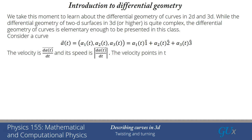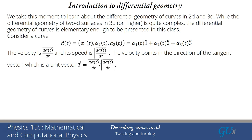If we have a curve parametrized in terms of time, we want to find its velocity and its speed. The velocity is simply the derivative of that curve alpha of T with respect to T, and the speed is the magnitude of that derivative. The velocity points in the direction of the tangent vector, which is the unit vector in the direction of the velocity. So I take the velocity and divide it by the speed to get the tangent vector.